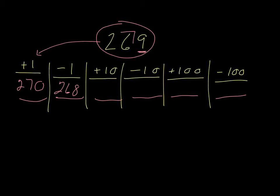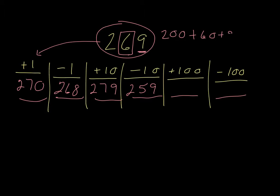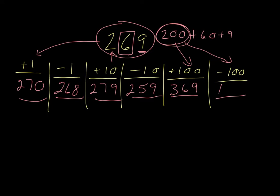If we add 10, we're looking at the 60 here — we have 6 sets of 10. If we add another set of 10, that gives us 279. And if we subtract a set of 10, that gives us 259. Looking at the hundreds now, we're looking at the digit 2, which is the same as saying 200. So the number is 200 plus 60 plus 9. If we add another set of 100 to 200, that means we have 369. And if we take one of those sets away, we're left with 169.